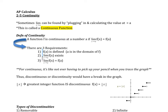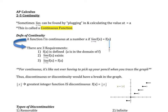So now we can say what the definition of continuity is. Here's what it's formally defined as: a function f is continuous at a number a if the limit as x approaches a of f(x) equals f(a). So the limit has to be the f(a) value — that's like plugging it in and getting a point there.